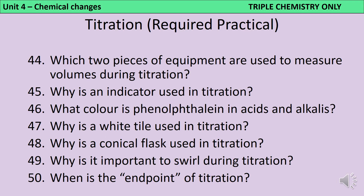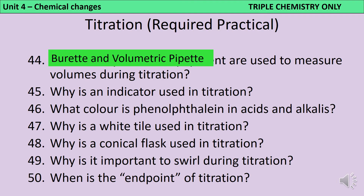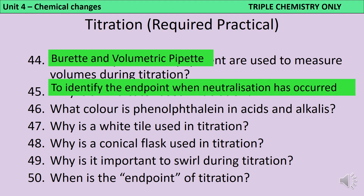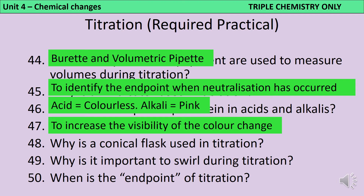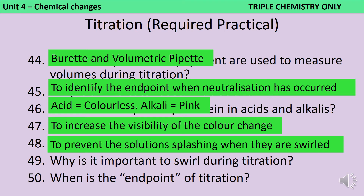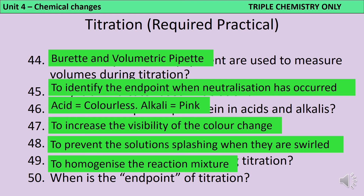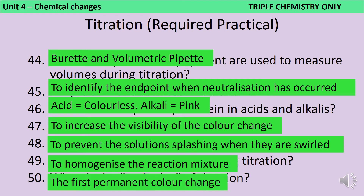In order to measure volumes during a titration, you need a volumetric pipette and a burette. An indicator is used to make the end point of the reaction visible when the colour changes. Phenolphthalein is colourless in acids and dark pink in alkalis. A white tile is used to make the colour change visible, and a conical flask is used to prevent solution from splashing out as you swirl. Swirling is important to homogenise the reaction mixture, and the end point is where you see the first permanent colour change.